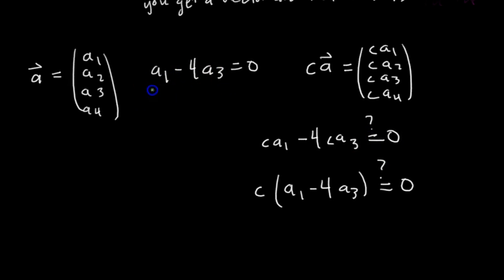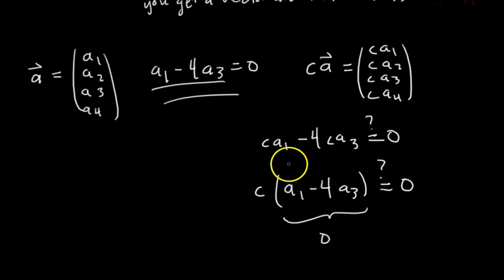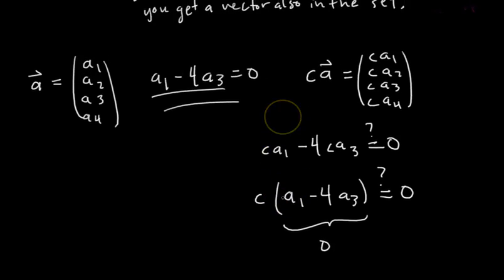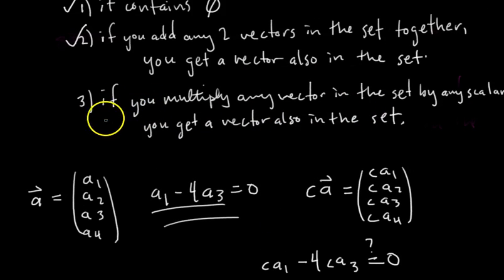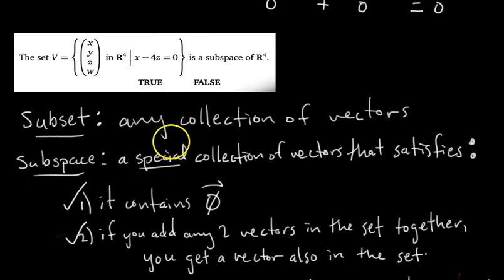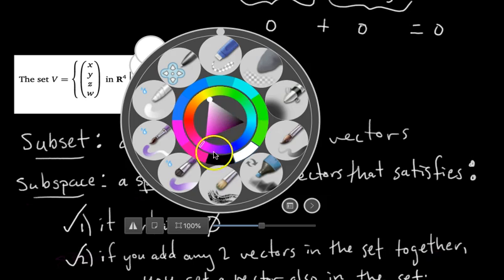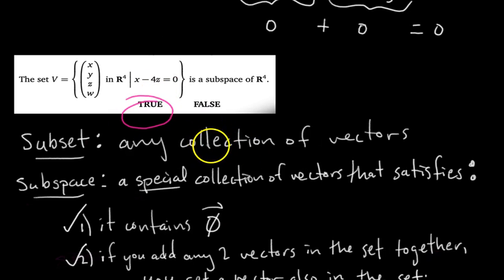We know that A1 minus 4A3 equals zero, so this part is zero. No matter what scalar C we pick, we get C times zero equals zero — always. So yes, this set is closed under scalar multiplication. Since this subset V satisfies all three conditions, V is a subspace of R4. Being a subspace of R4 means all vectors in the subset are vectors in R4, which is clearly true by how the set is defined.